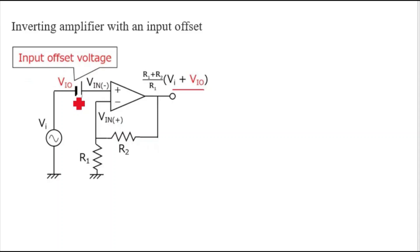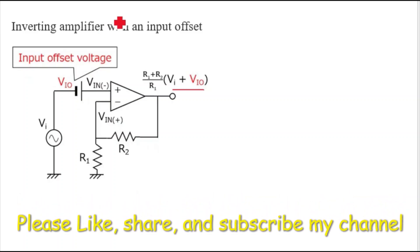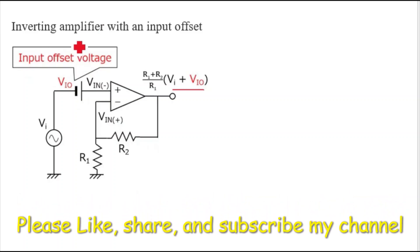This offset voltage creates much trouble especially when you use open-loop sensors. If you know the value of the input offset voltage, you can account for it and reduce the error. That is why input offset voltage is necessary to consider.